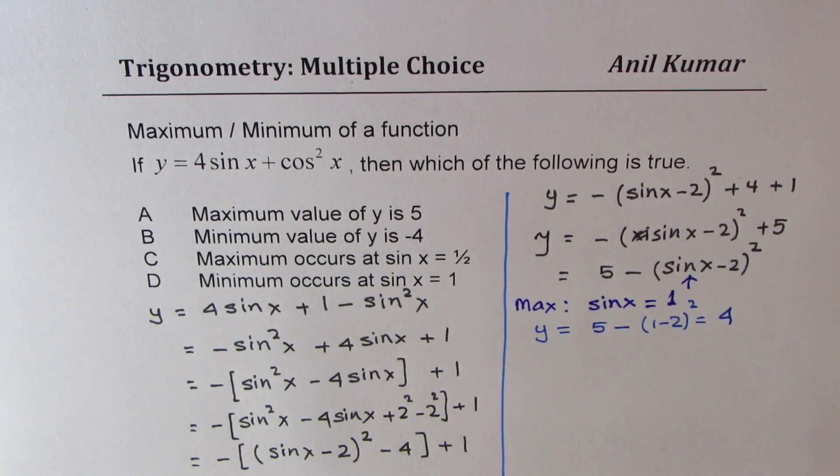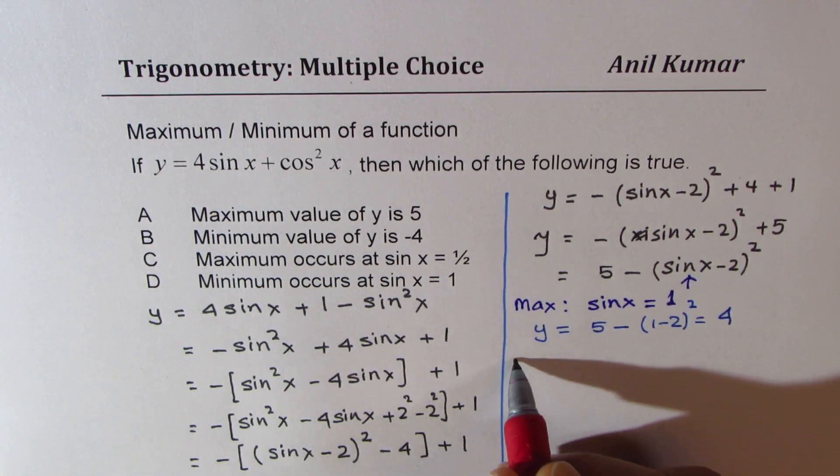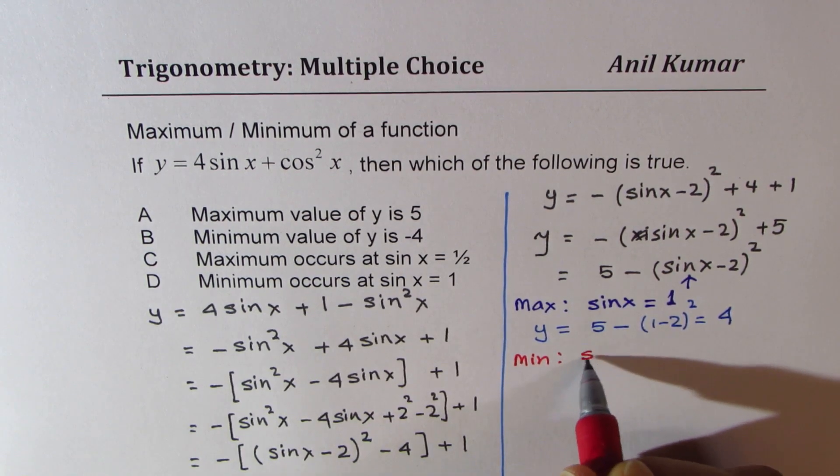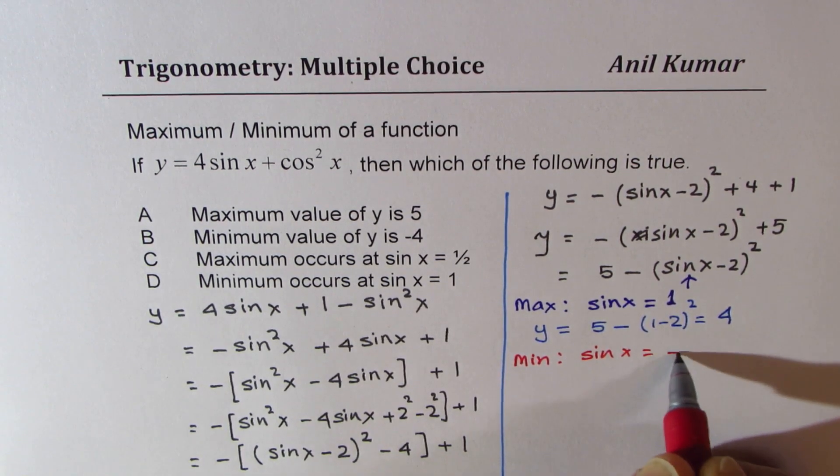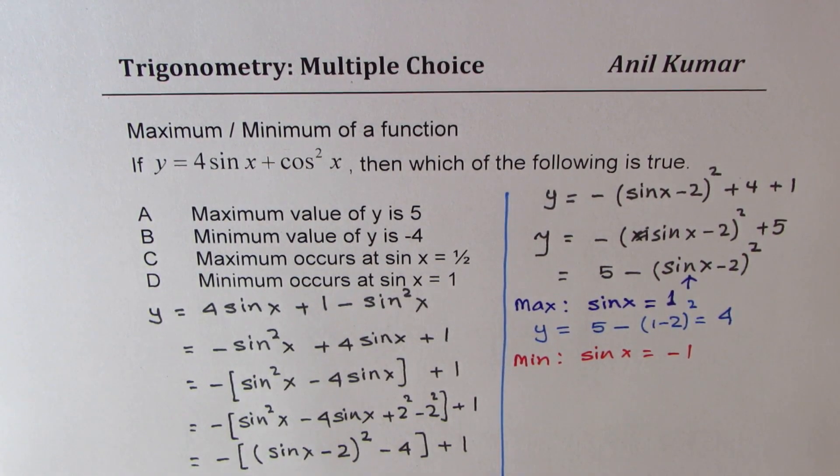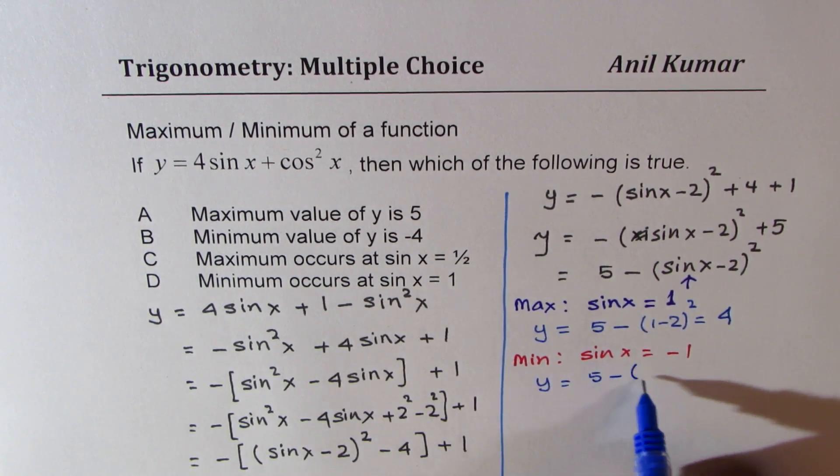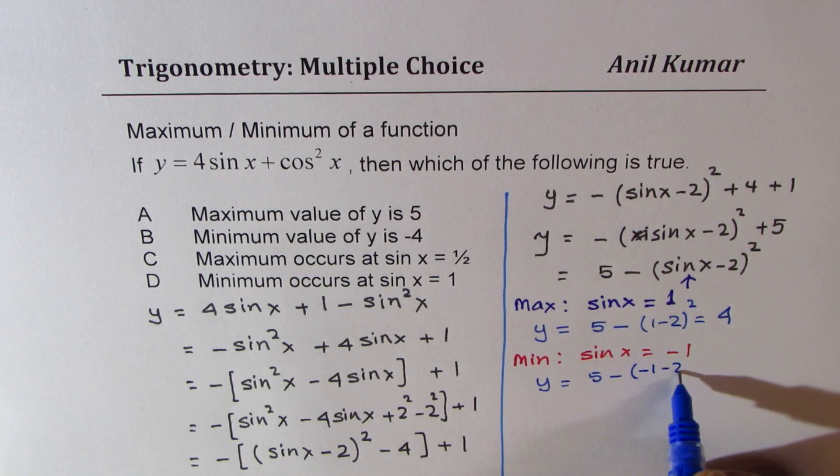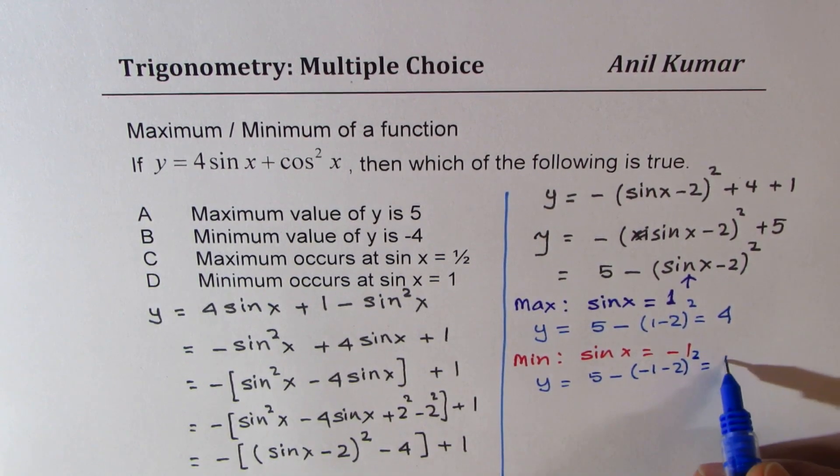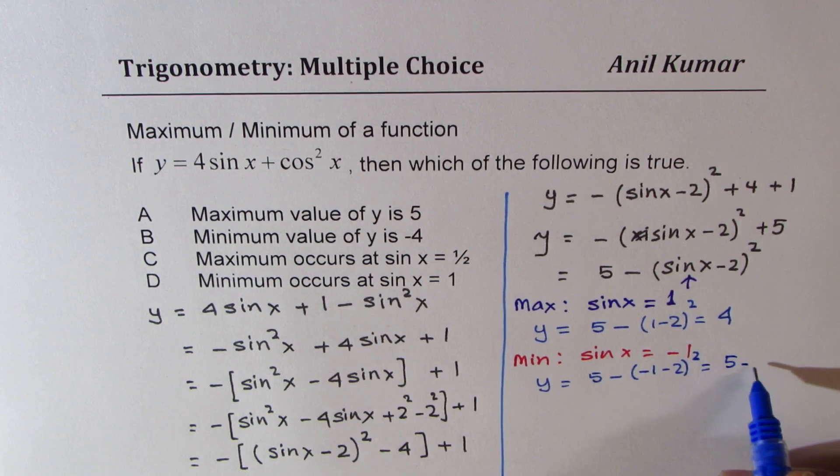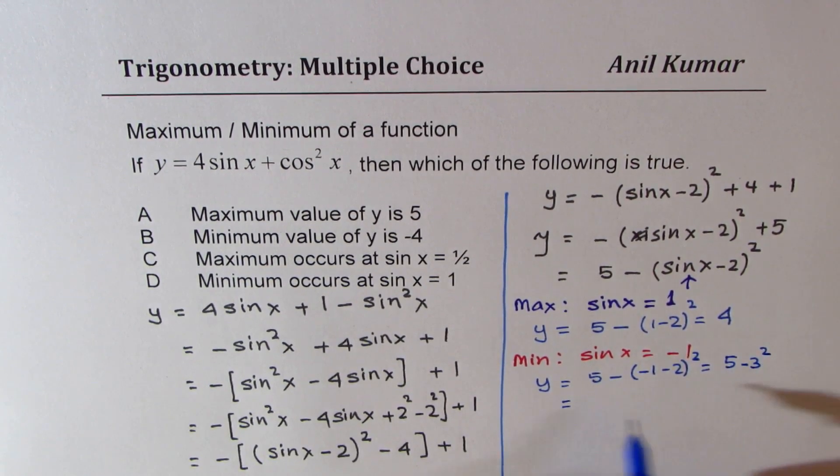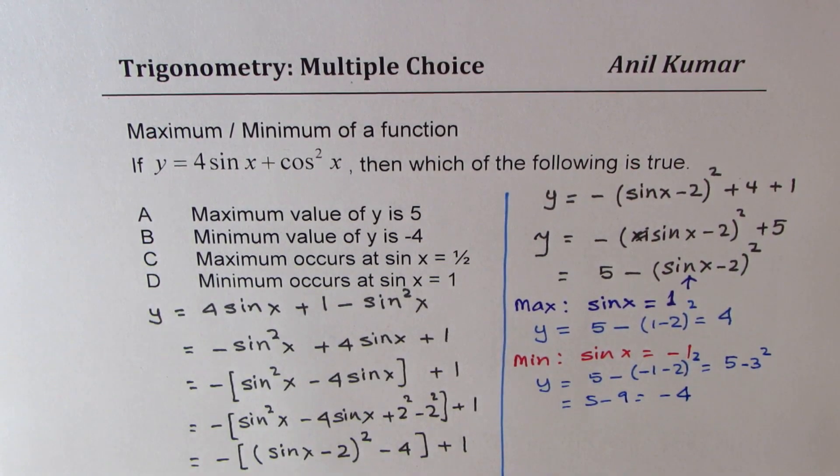Now to get the minimum value, we could put sin x as minus 1. To get the minimum value, we could take sin x as equals to minus 1. Now in that case, what happens? If I substitute minus 1 here, I get y equals 5 minus minus 1 minus 2 whole square, which means 5 minus 3 square. That gives you 9. So 5 minus 9 gives me minus 4.